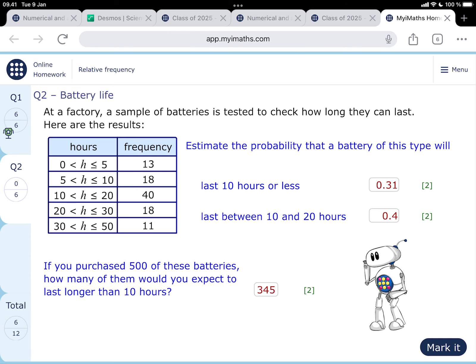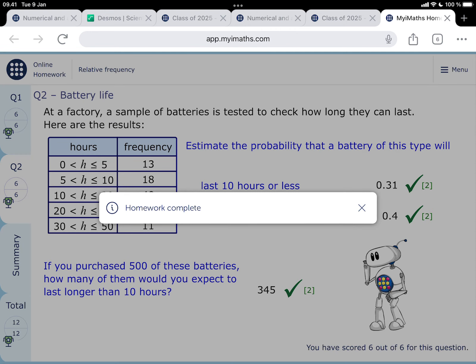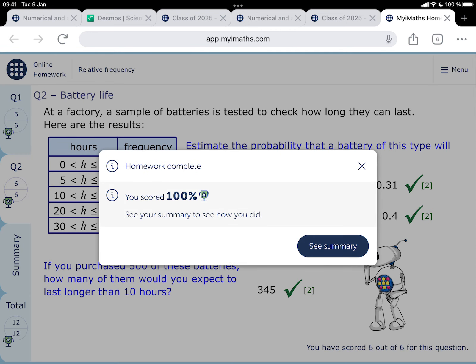So I filled those in on the MyMaths. Estimate the probability that a battery of this type will last for 10 hours or less, that's 0.31, last between 10 and 20 hours, that's 0.4, and then the number that we expect to last more than 10 hours out of 500, 345. So that's done in the MyMaths, let's mark it, but don't forget to also write it out in your books.